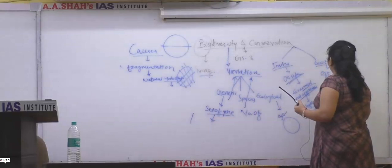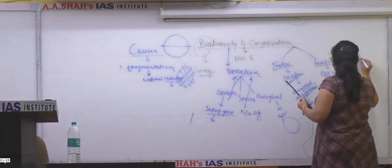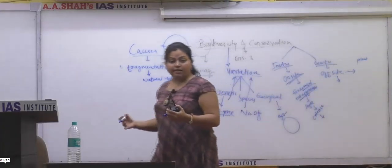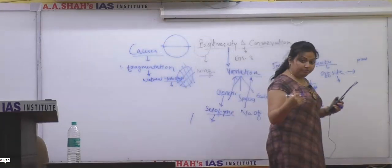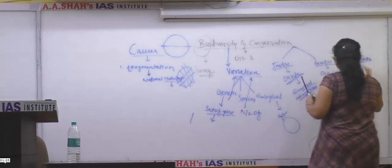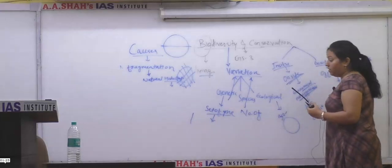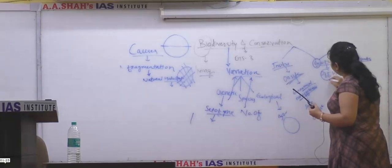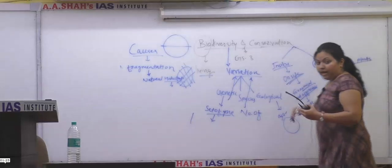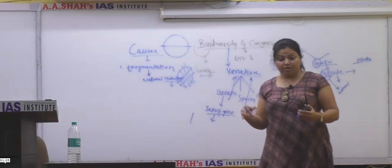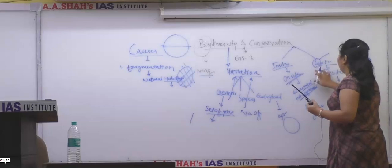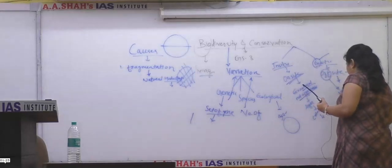Ex situ is off-site conservation. When do we need off-site? When a particular plant or animal is threatened, near-threatened, or endangered. Ex situ means we take special measures to conserve species outside their natural habitat. For example, the government started a scavenger conservation program. Earlier there were tiger and lion conservation programs too.